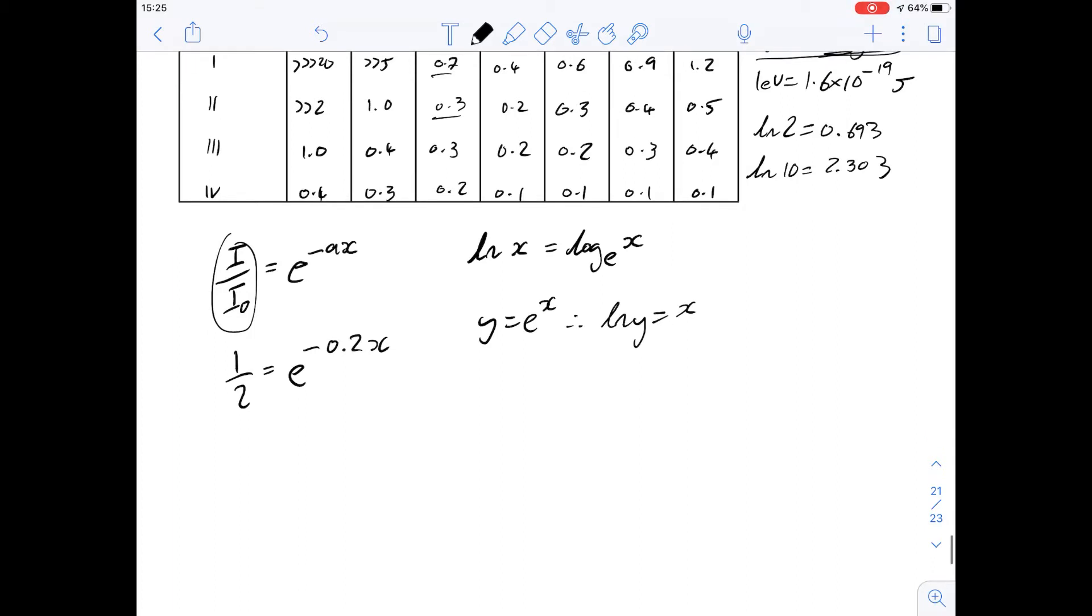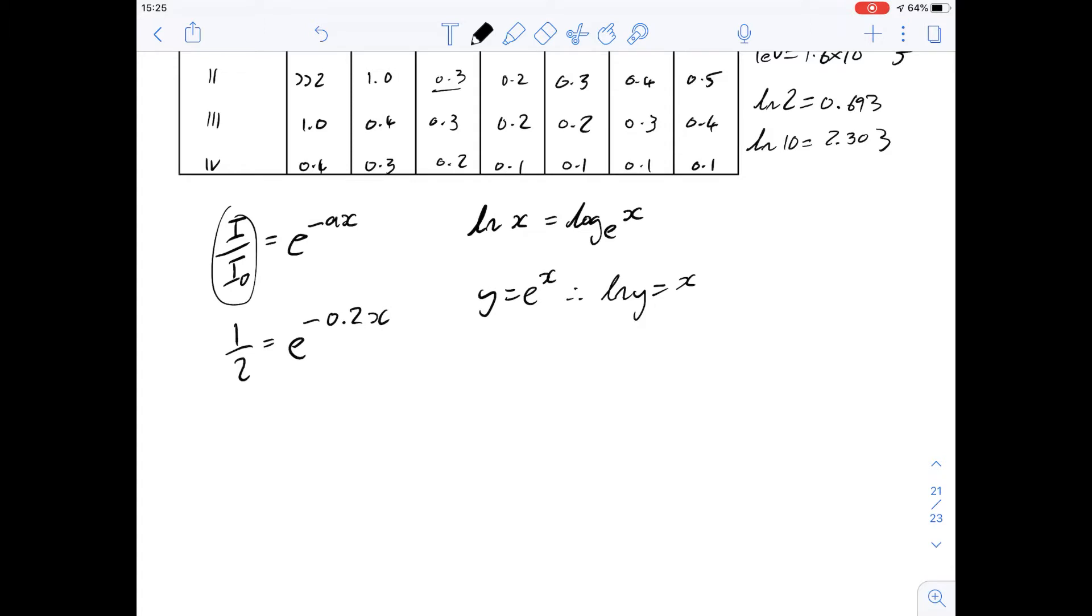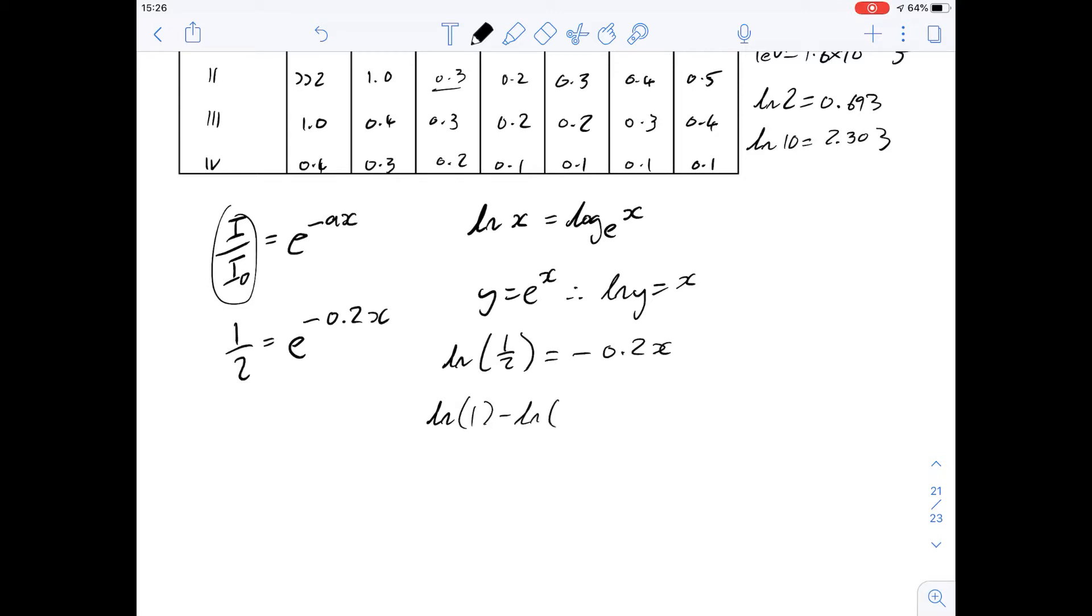So if we were to look at that in this case, we can set y to be a half. So the natural log of a half is going to be e to the x which means that it's going to be minus 0.2x. Now we're not given a value for the natural log of a half but when you have a log that's a fraction what you can do is take away the log of the numerator and the log of the denominator and you end up with the same answer. So that's one of the log rule steps there.